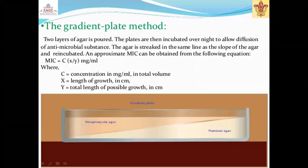Gradient plate method: two layers of agar are poured. The plates are then incubated overnight to allow diffusion of the antimicrobial substance. The agar is streaked in the same direction as the slope of the agar and re-inoculated. The approximate MIC can be obtained from the equation: MIC = C × X / Y (mg/mL), where C is the concentration in mg/mL in total volume, X is the length of growth in cm, and Y is the total length of possible growth in cm.